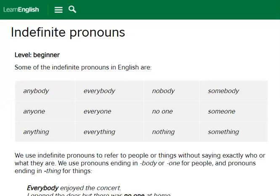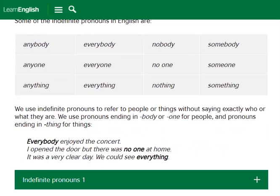Some of the indefinite pronouns in English are: anybody, anyone, anything, everybody, everyone, everything, nobody, no one, nothing, somebody, someone, something. We use indefinite pronouns to refer to people or things without saying exactly who or what they are. We use pronouns ending in 'body' or 'one' for people, and pronouns ending in 'thing' for things. For example: 'Everybody enjoyed the concert.' 'I opened the door but there was no one at home.' 'It was a very clear day. We could see everything.' Below is an exercise to check your understanding.